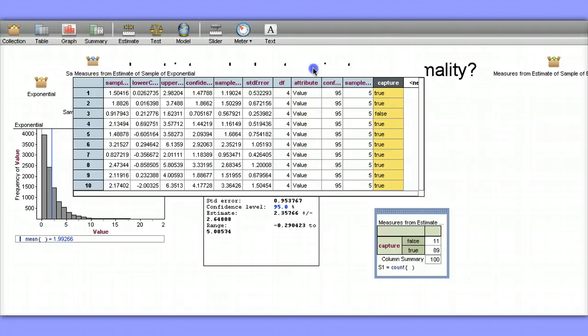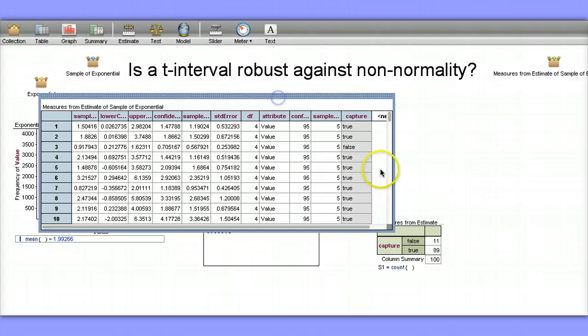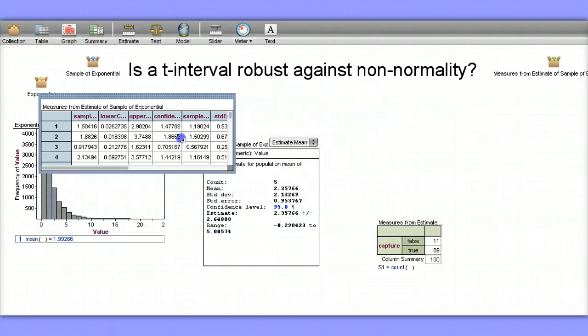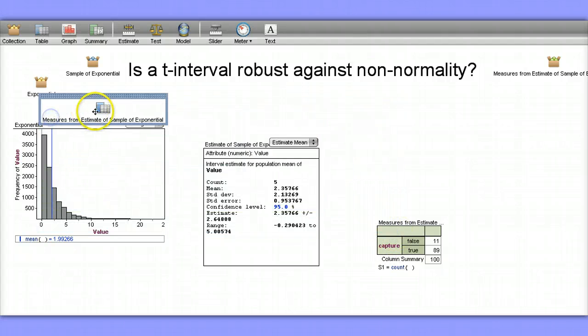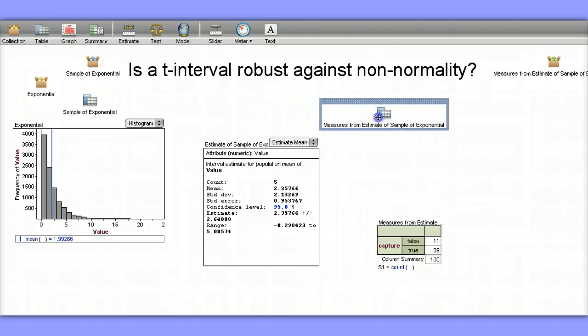Now, you might be saying, well, maybe this particular one or this particular time we were unlucky. I bet if we did this again with a different group of 100 confidence intervals, we'd be closer to the 95% here. Well, let's do that again and find out.